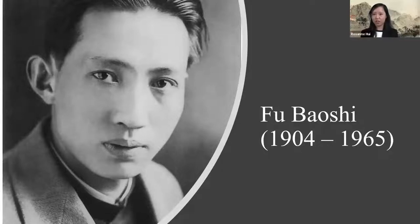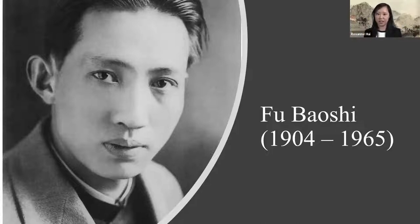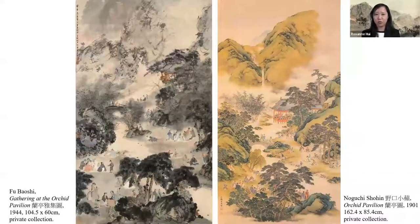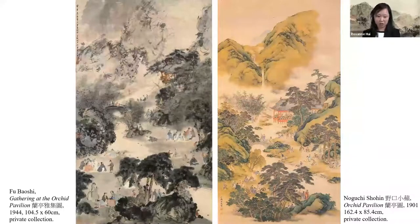From 1932 to 1935, he had two stays in Japan to further his studies with the support of artist and educator Xu Beihong. He studied at the Imperial School of Fine Art in Tokyo under the instruction of Kinbara Seigo, and was exposed to various subject matters and styles through viewing exhibitions and even translating Japanese art theory books. His experience in Japan largely influenced his artistic style. On the right we see Nobuchi Shaohin's Orchid Pavilion completed in 1901, and on the left Fu Baoshi's take on the same subject four decades later.